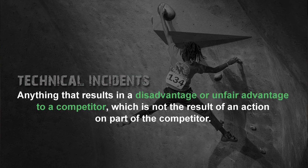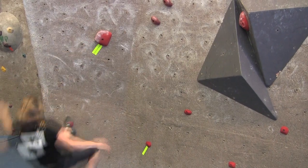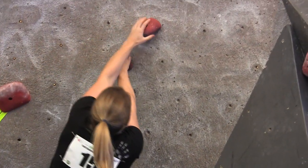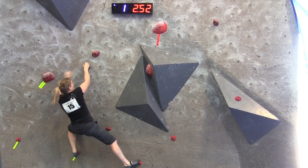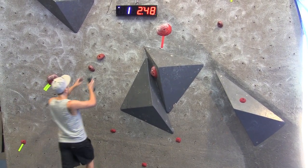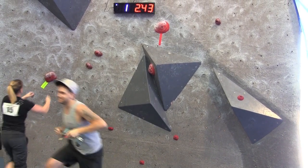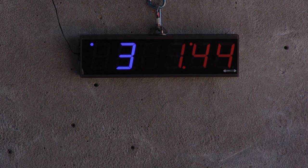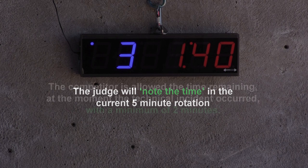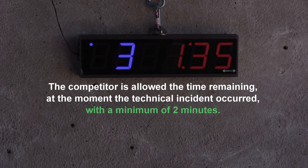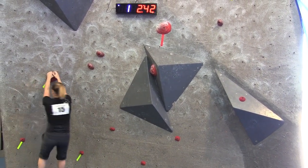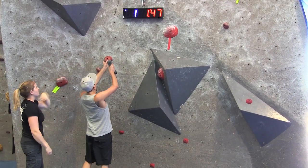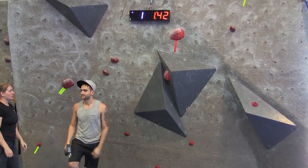A technical incident is defined as anything that results in a disadvantage or unfair advantage to a competitor which is not the result of an action on the part of the competitor. The most common instances are spun or broken holds. Should a hold spin or break without causing the competitor to fall, the competitor may choose to continue climbing, in which case the attempt counts as normal. The competitor can also choose to call a technical and come off the wall. Once the hold is fixed, the competitor's next attempt would be considered a continuation of the last attempt, meaning the earlier attempt would not count against them. When a technical incident occurs, the judge will note the time in the current 5-minute rotation. The competitor is allowed the time remaining at the moment the technical incident occurred, with a minimum of 2 minutes. If the technical can be fixed quickly within the current time rotation period, the competitor can simply choose to resume their attempts in the current time period. Otherwise, the competitor can choose to resume their attempts with the noted time remaining, with a minimum of 2 minutes, in a future rotation period to be determined by the head judge.